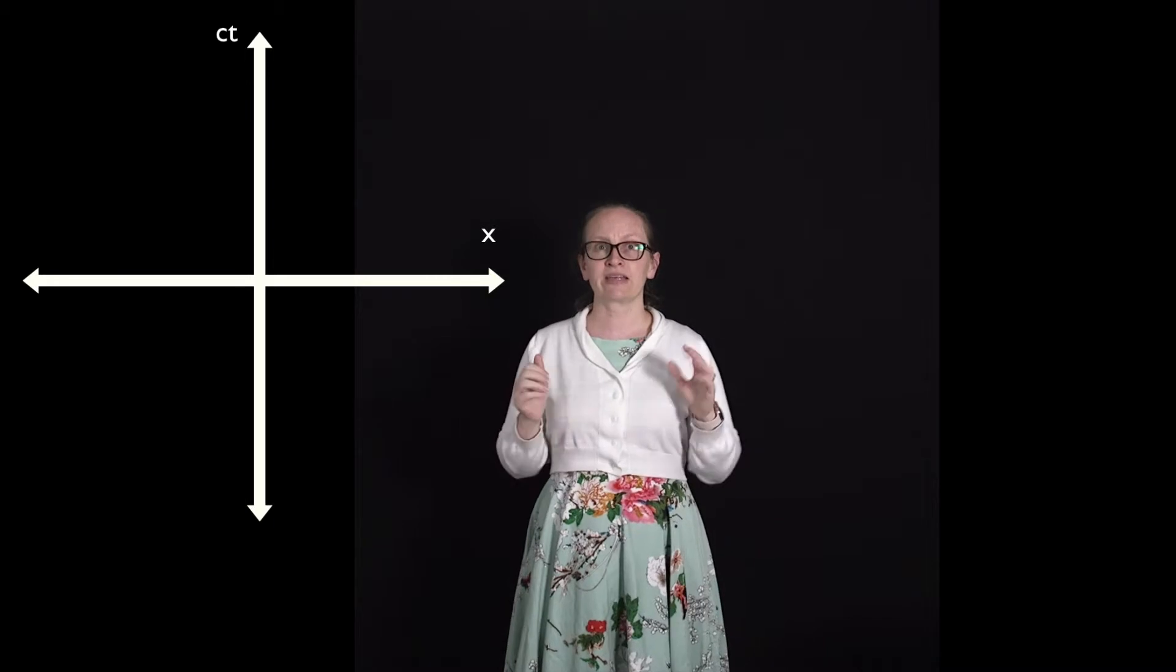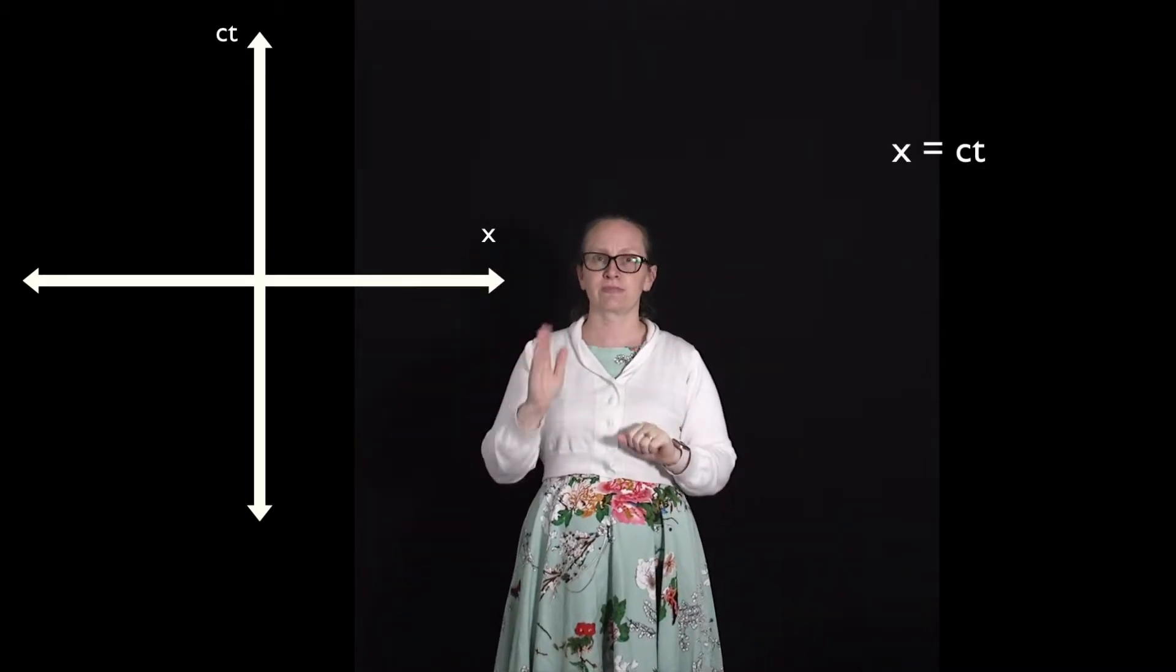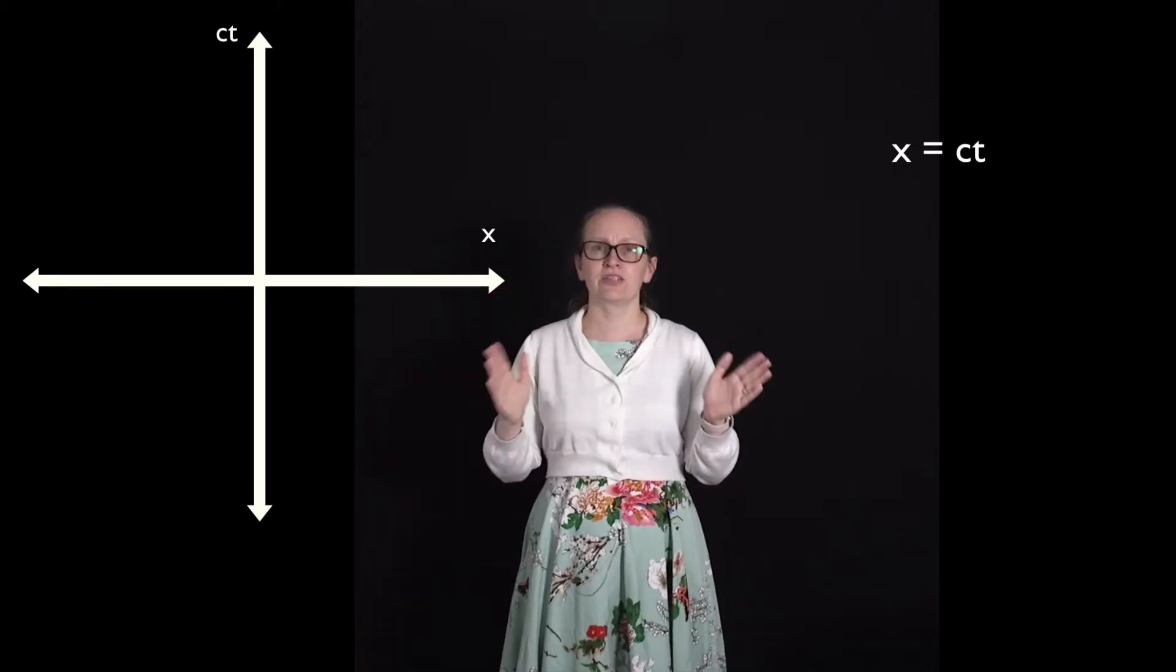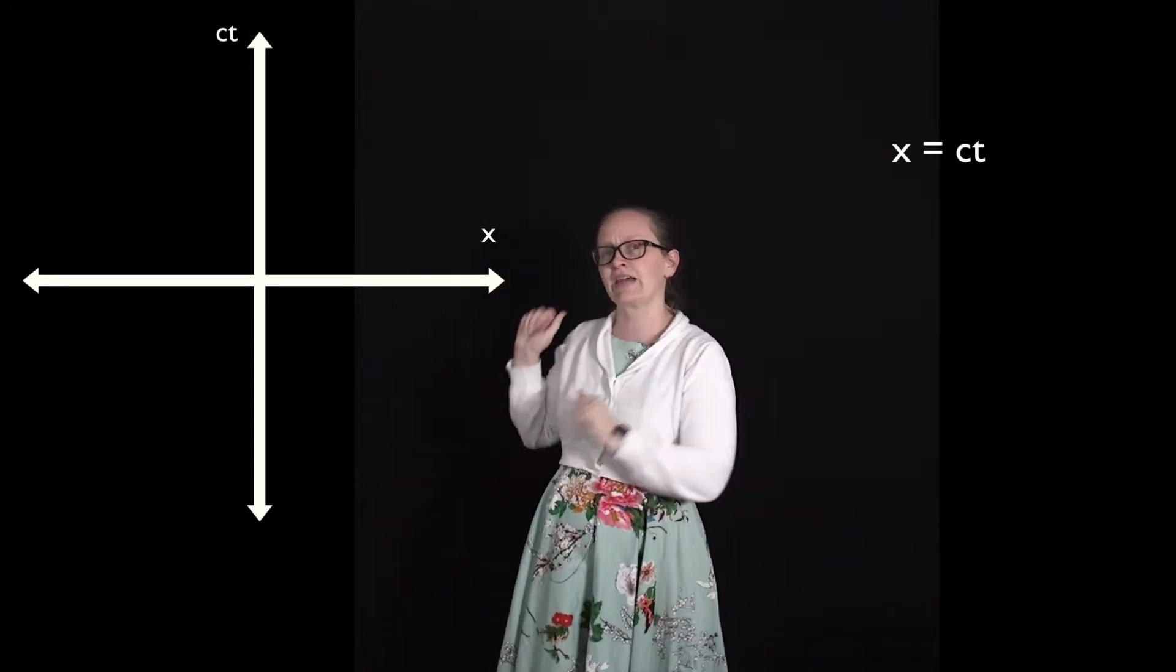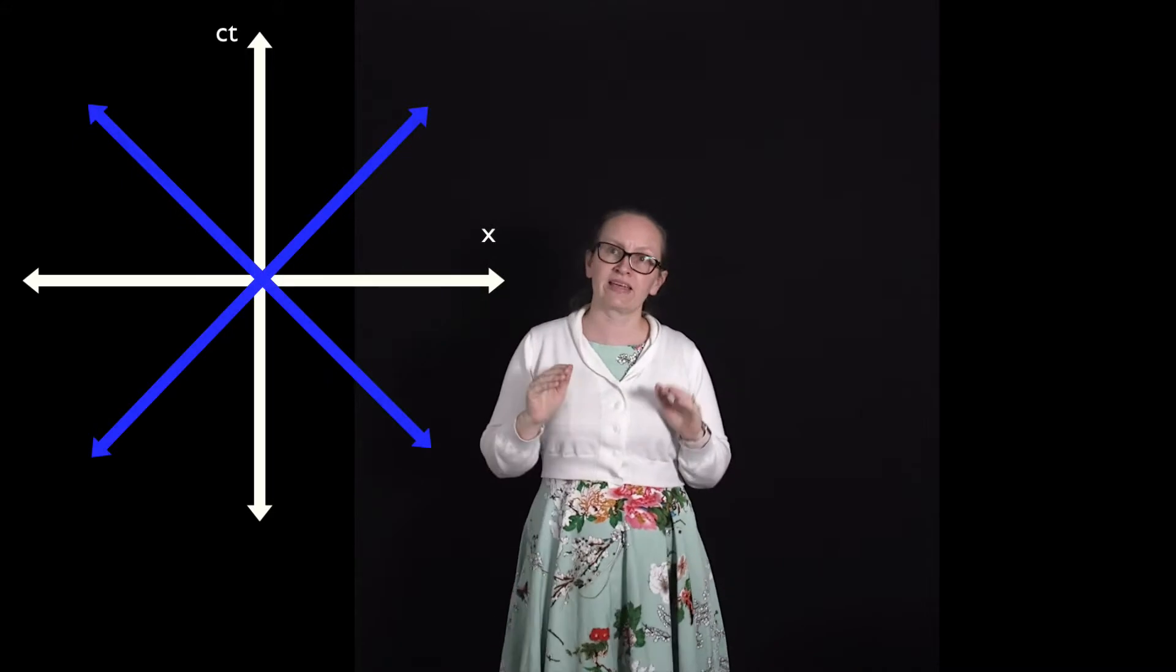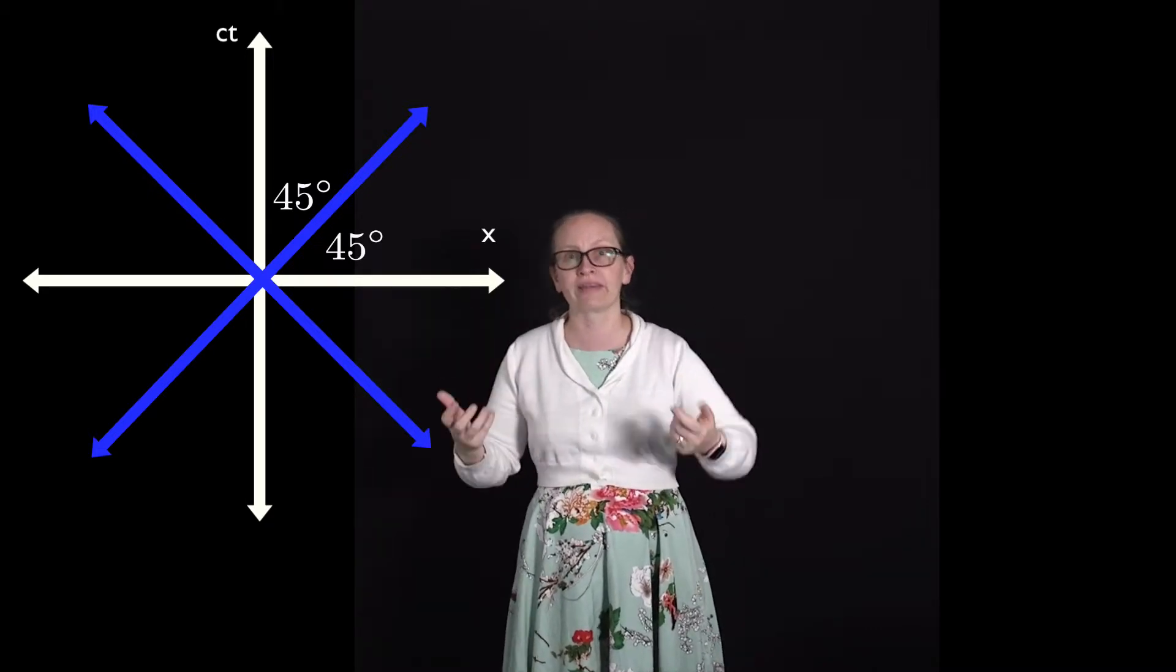For a light ray, we can write x equals ct, because the speed of the light ray is c. So on our space-time diagram, the light travels along lines like this, which make an angle of 45 degrees with both the vertical and horizontal axis. So they have a gradient of 1.